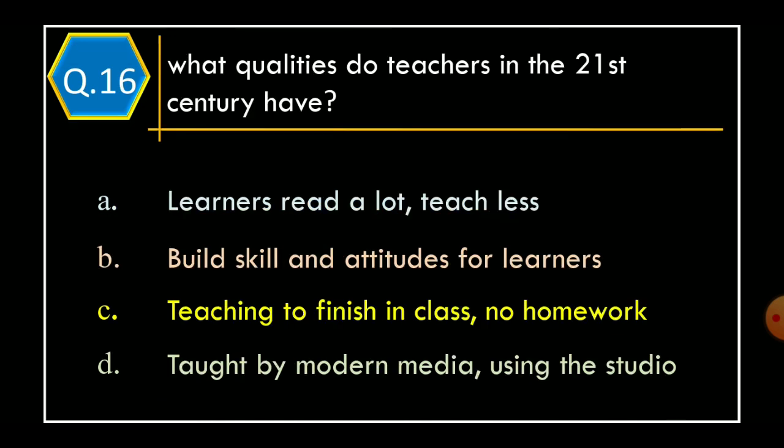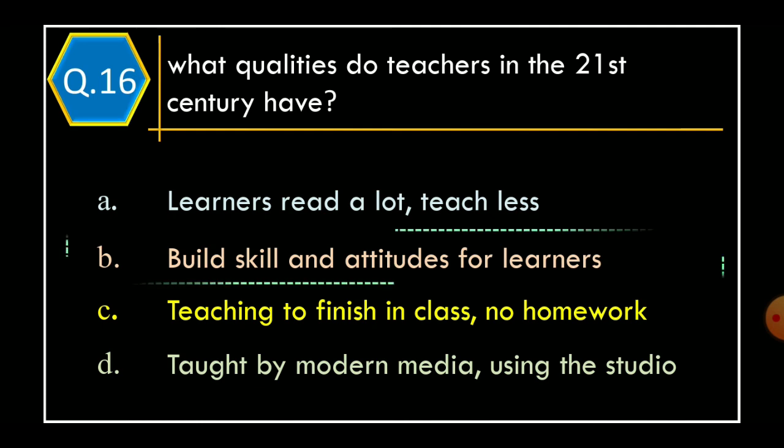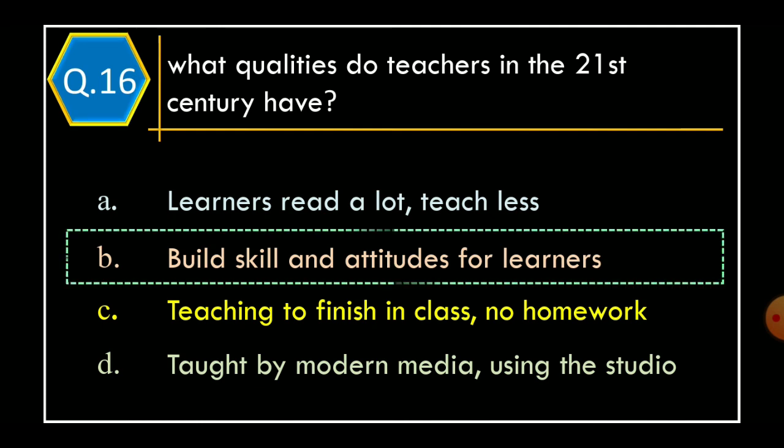Question 16: What qualities do teachers in the 21st century have? Option A: Learners read a lot, teach less. Option B: Build skills and attitudes for learners. Option C: Teaching to finish in a class, no more. Option D: Taught by modern media using the studio. The correct option is Option B: Build skills and attitudes for learners. Thanks for watching.